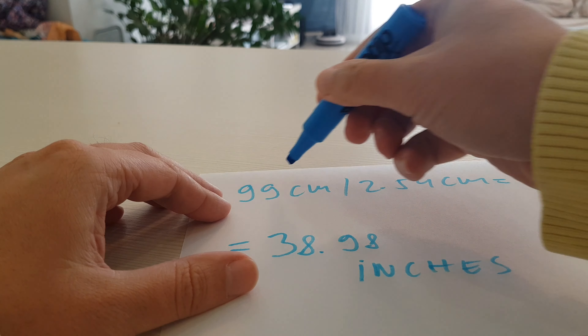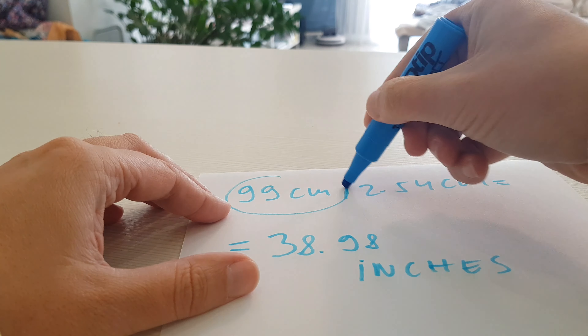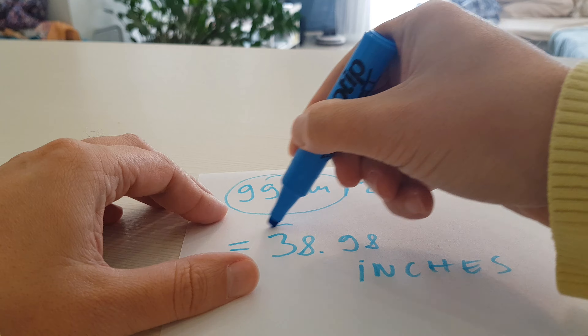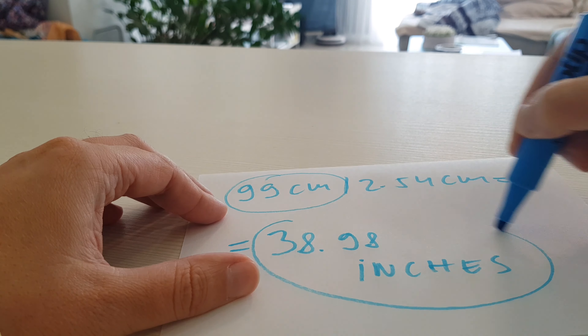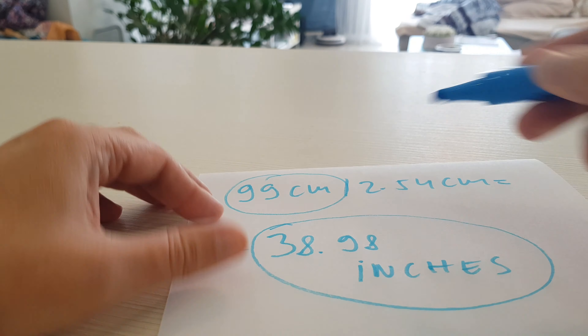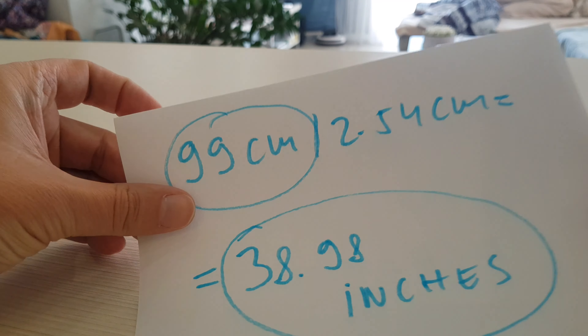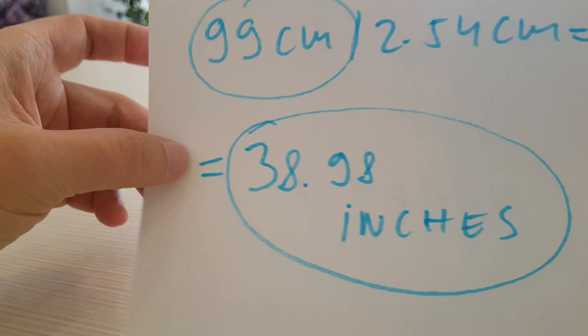Here is the solution again: 99cm equals 38.98 inches.